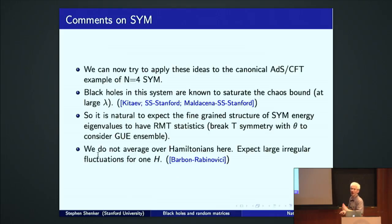Well, we now can try to apply these ideas, these intuitions to the canonical example, let's say, of ADS-CFT, which is super Yang-Mills theory. Well, black holes in the system are known to saturate the chaos bound, at large t'Hooft coupling. So if any system is going to be chaotic and have random matrix level statistics, this is a good candidate. So let's assume that the fine-grained energy level statistics are described by random matrix theory. I probably, let's say you're GUE, which means you break every symmetry you can find at a theta angle to break time reversal.